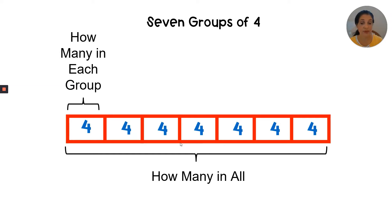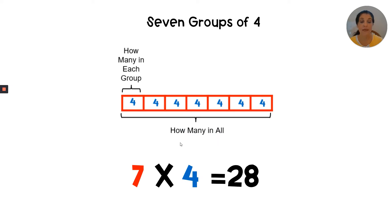We would have seven boxes with four in each box. We counted by fours seven times and reached 28, so seven times four equals twenty-eight.